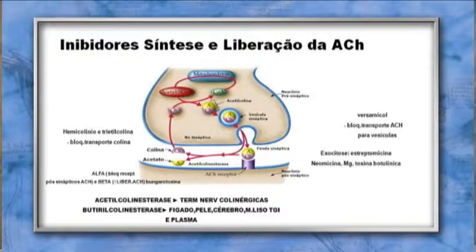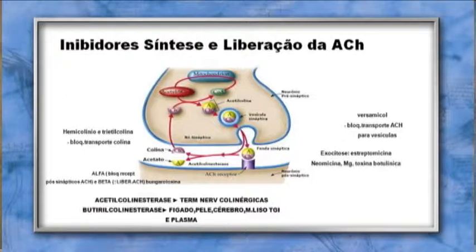Quando a acetilcolina cai na fenda e é metabolizada pela acetilcolinesterase, transforma-se em acetato e colina. A acetilcolinesterase é a enzima que destrói a acetilcolina nas terminações nervosas colinérgicas. A butirilcolinesterase atua no fígado, pele, cérebro, músculo liso, trato gastrointestinal e plasma.